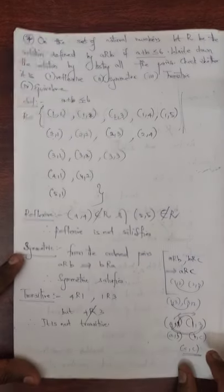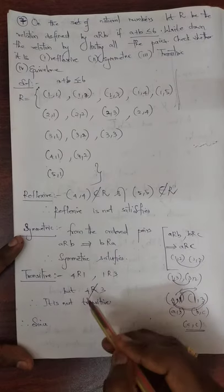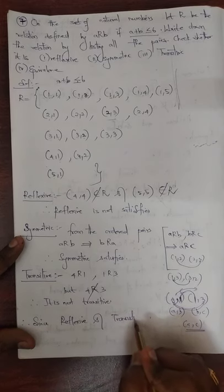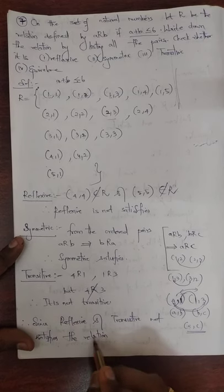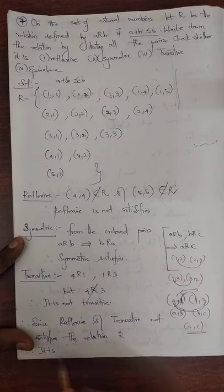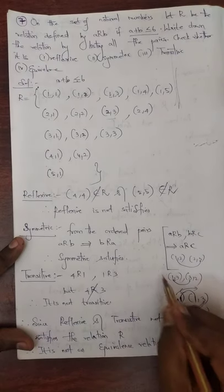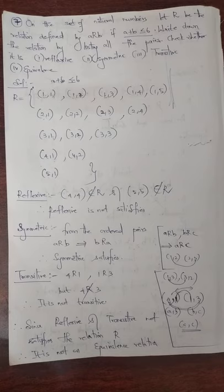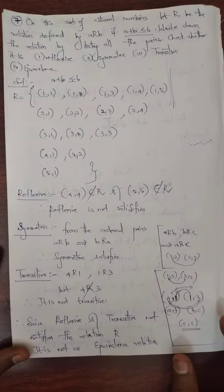Therefore, transitive is not satisfied. Since reflexive and transitive do not satisfy the relation R, therefore it is not an equivalence relation. Instead of searching each and everything, if we can show only one false statement, then it is enough. Thank you.